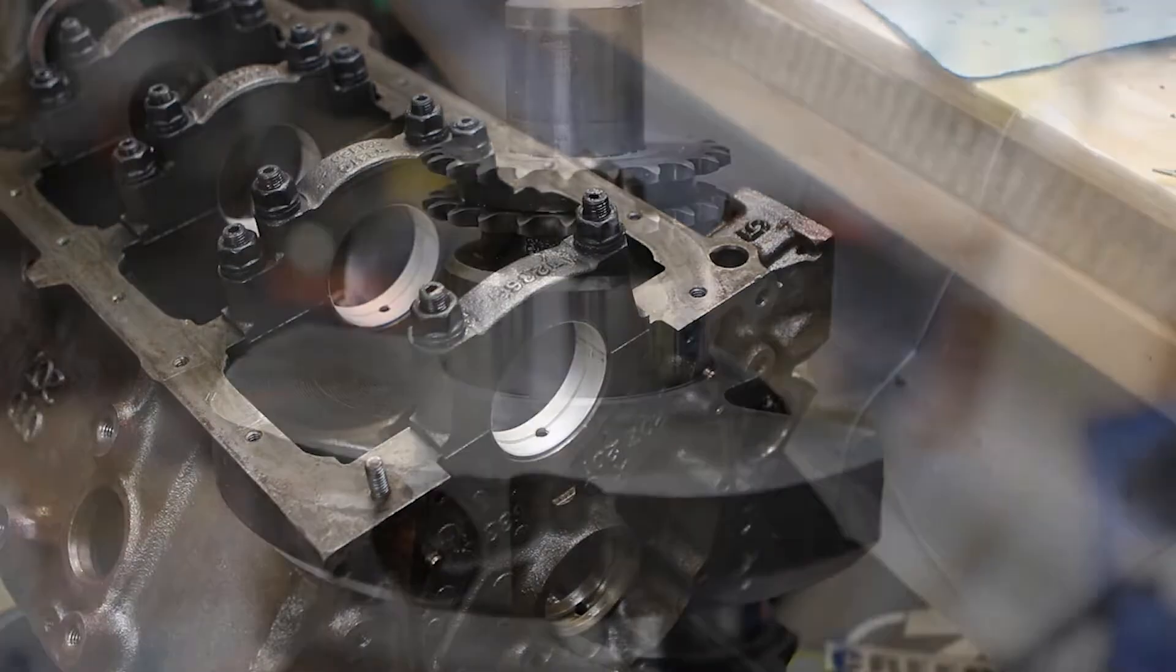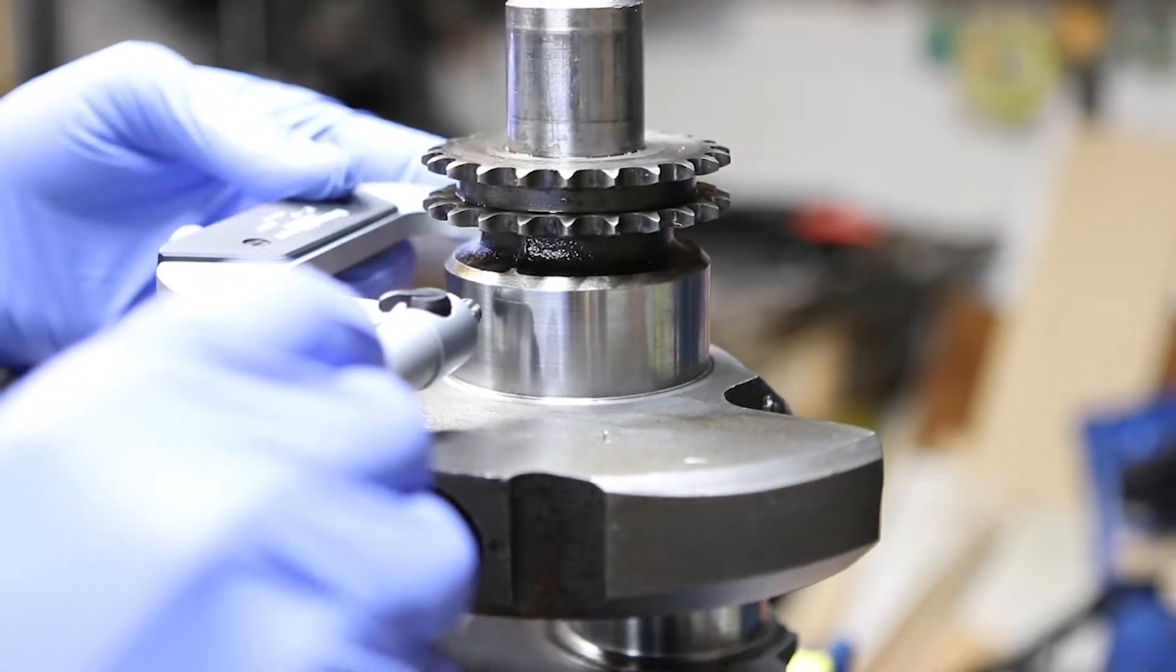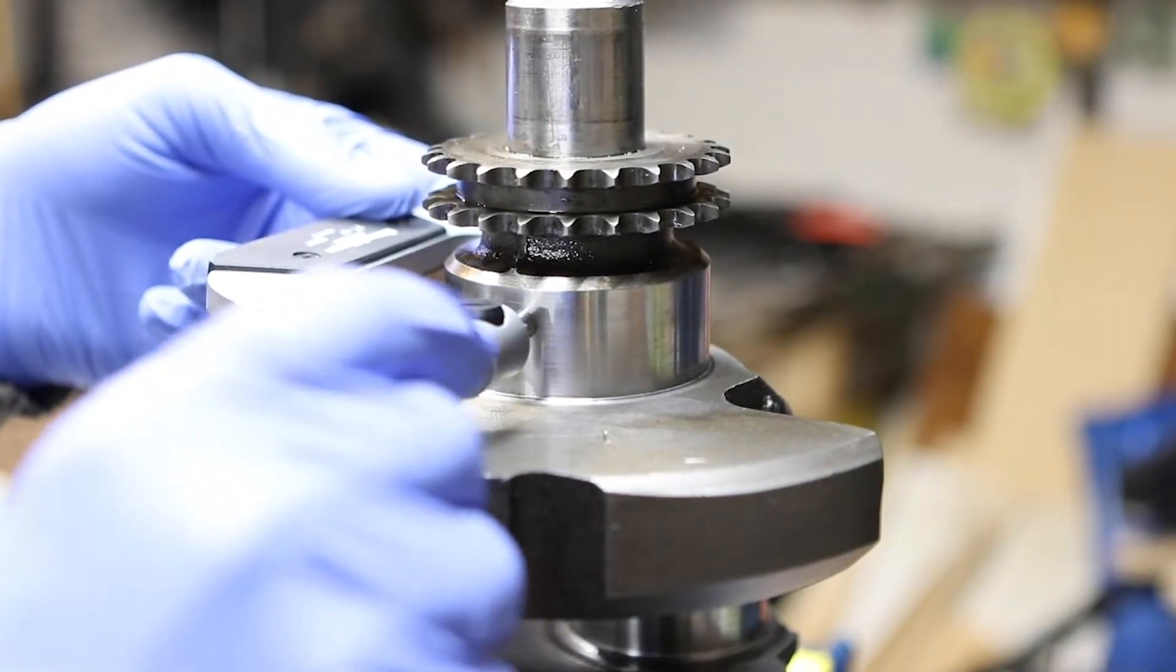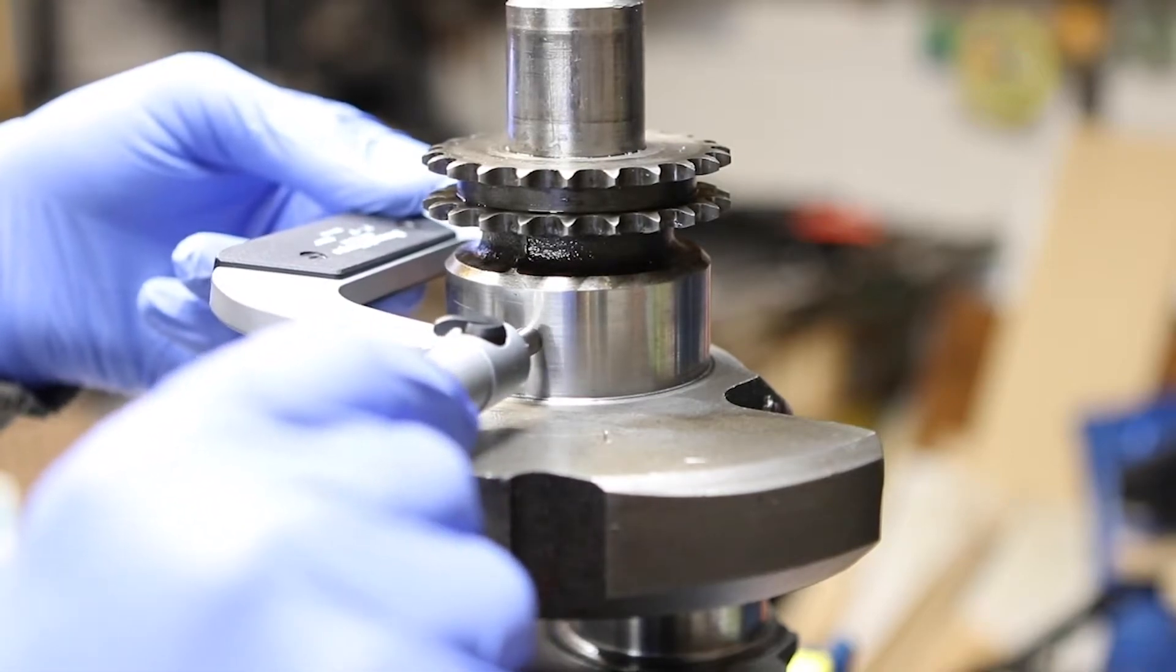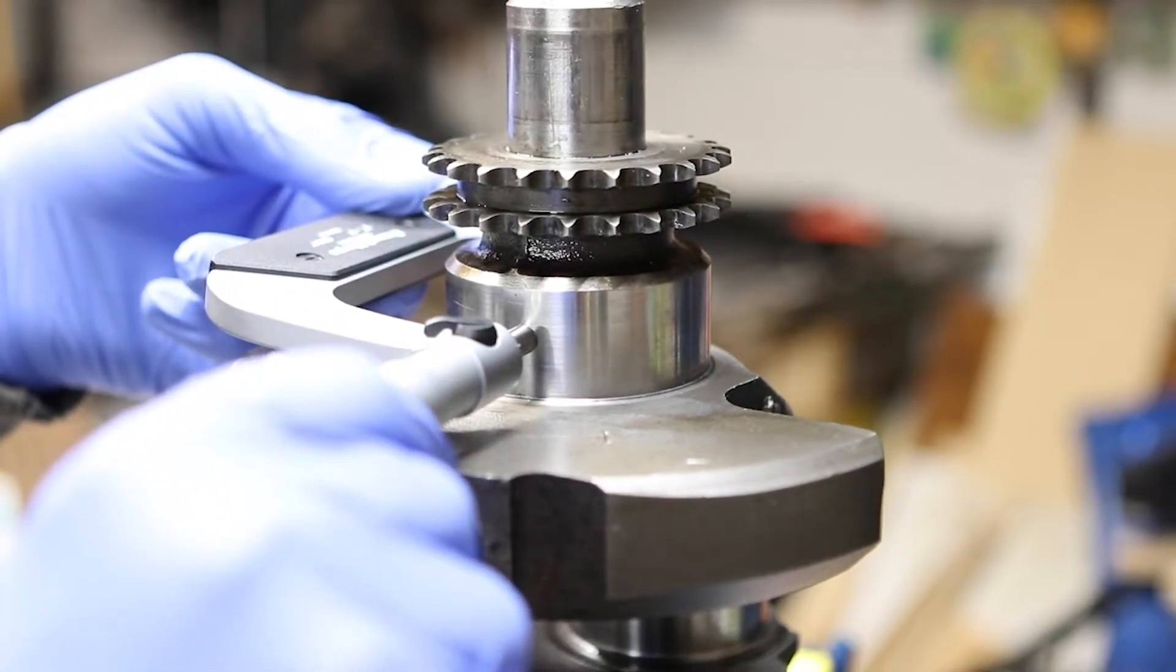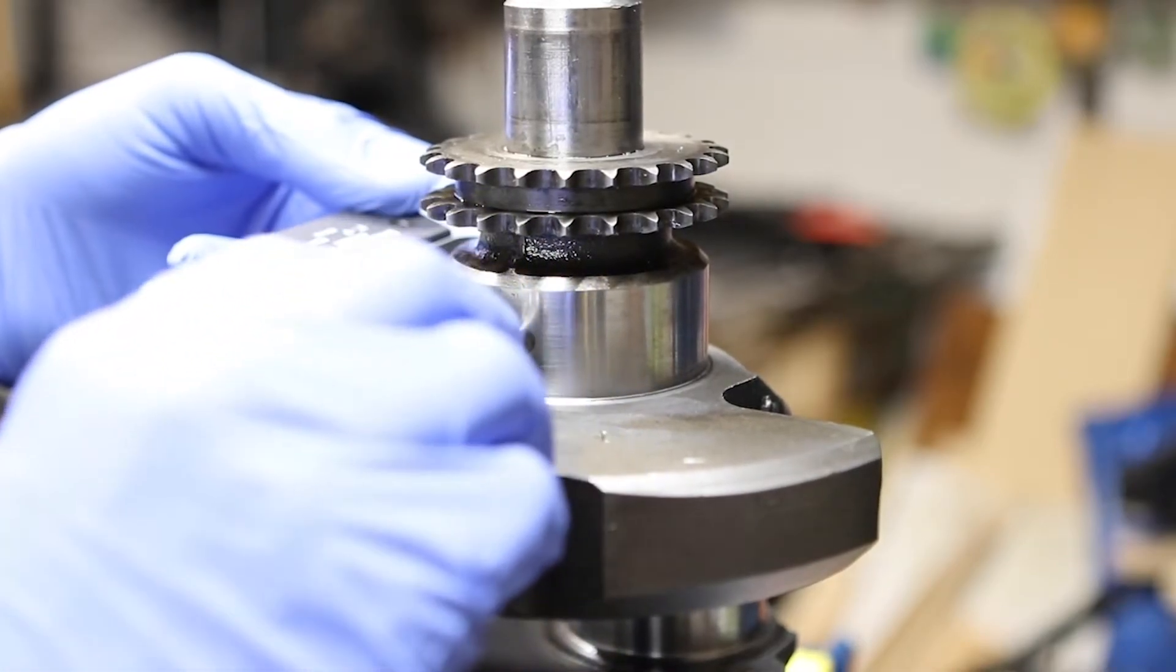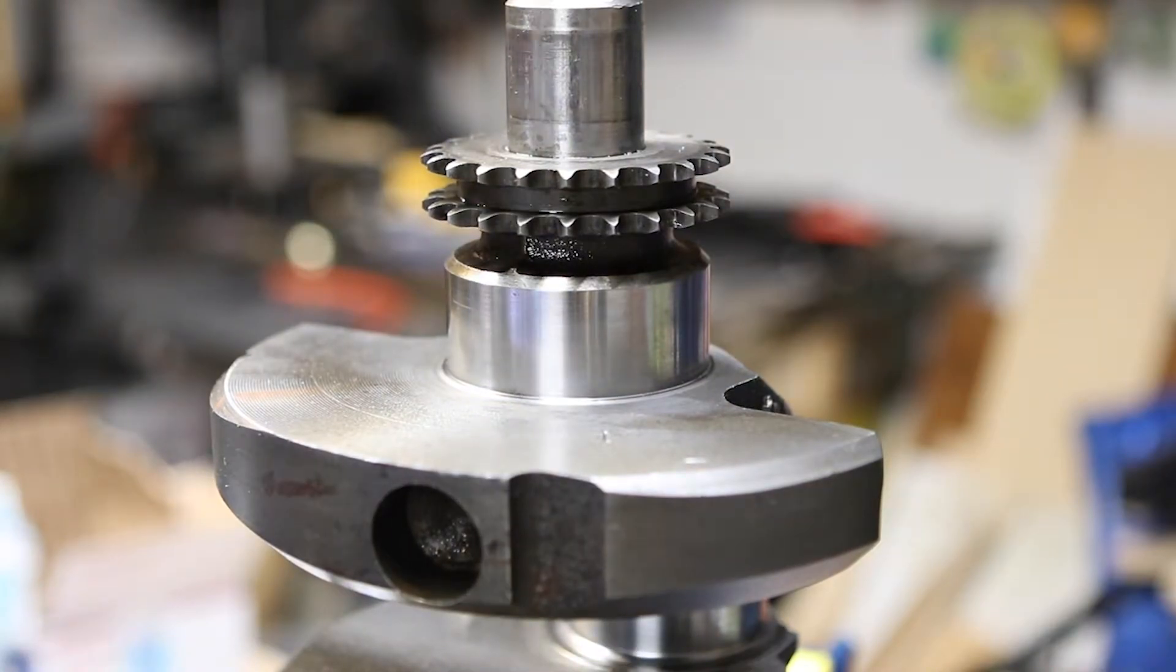Okay, so now we're going to mic the journals and set our dial bore gauge. It looks like it's 2.489, so 2.49 really close. We're talking about a thousandth of an inch under spec.